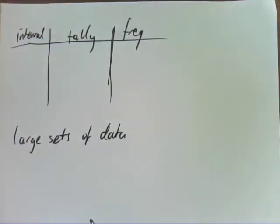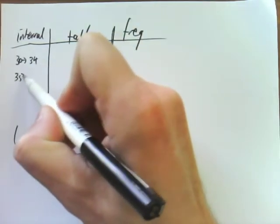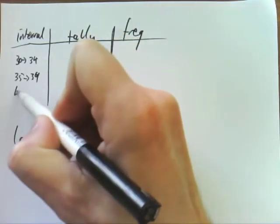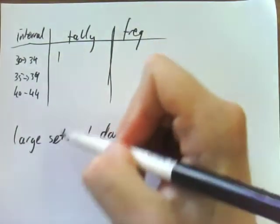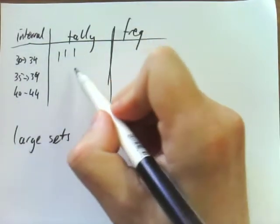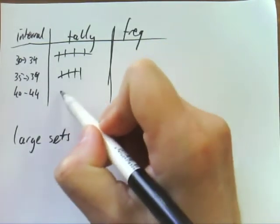So these are used for much larger sets of data, and you have an interval here. So let's say it was 30 to 34, and then 35 to 39, and 40 to 44, and so on. And as you go through your data set, you just put a tally. So you just go through and work out, as you go through your data, how many there are.